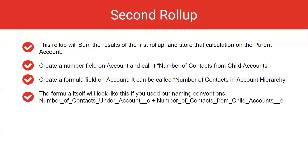The formula field can be called 'Number of Contacts in Account Hierarchy.' The formula itself will look like this if you've used our naming conventions: Number of Contacts Under Account plus Number of Contacts from Child Accounts.